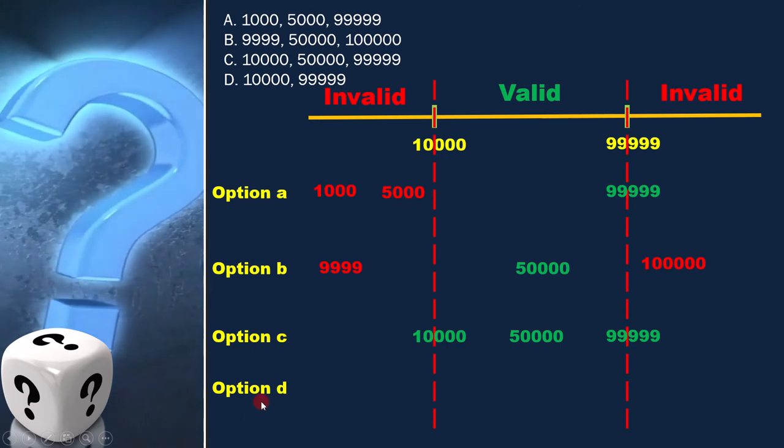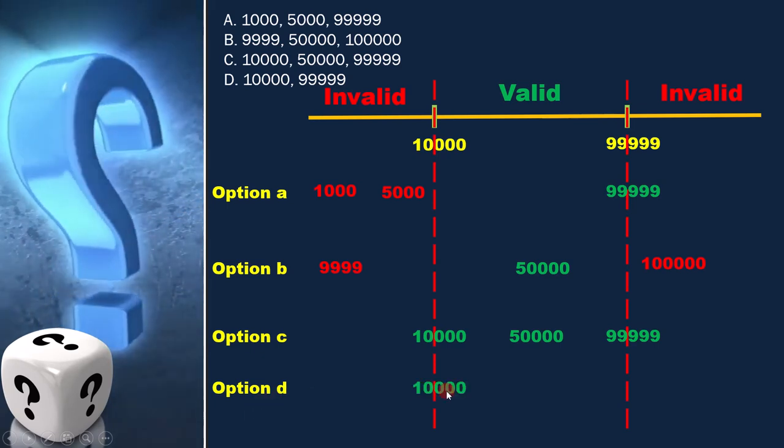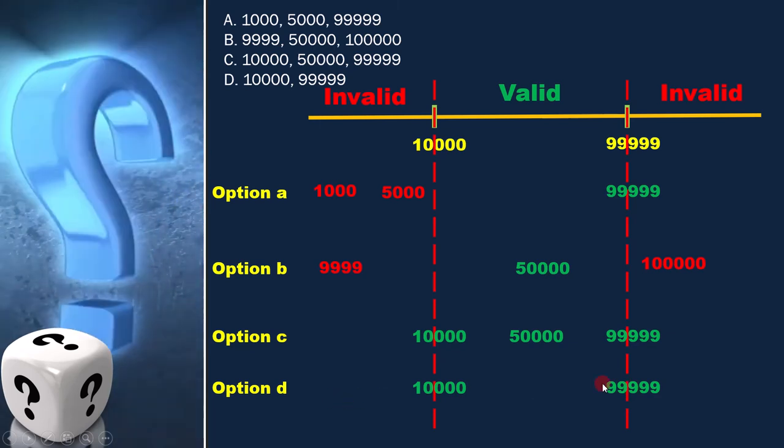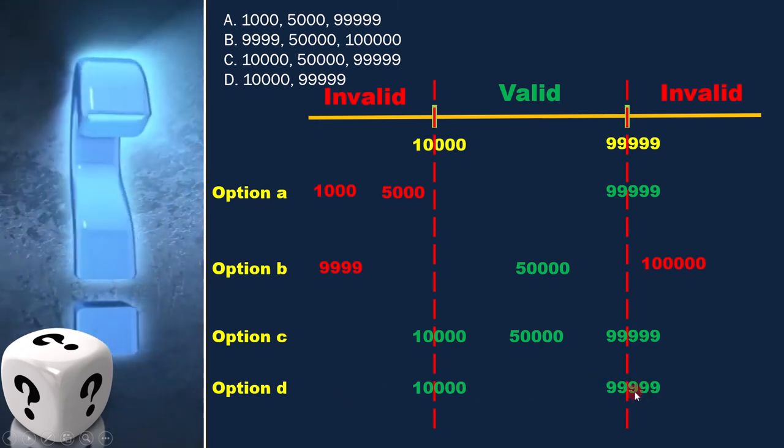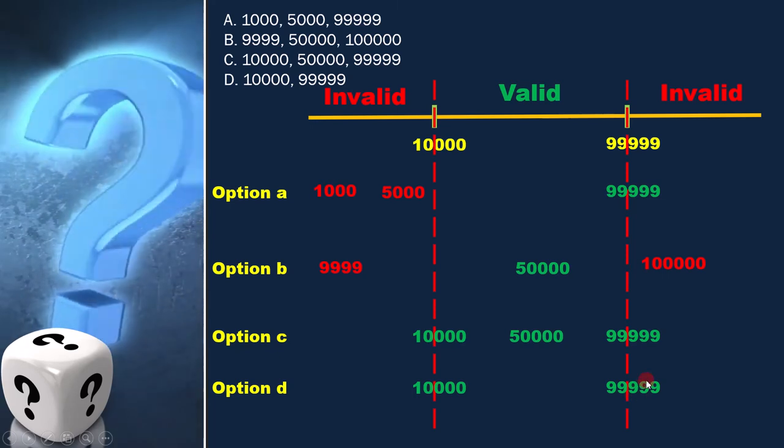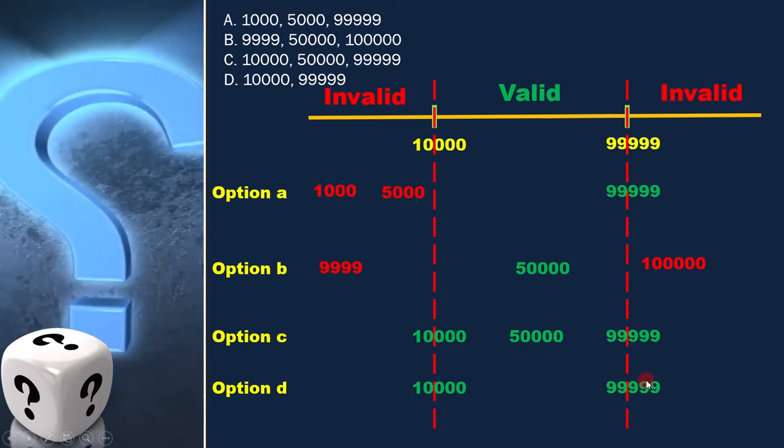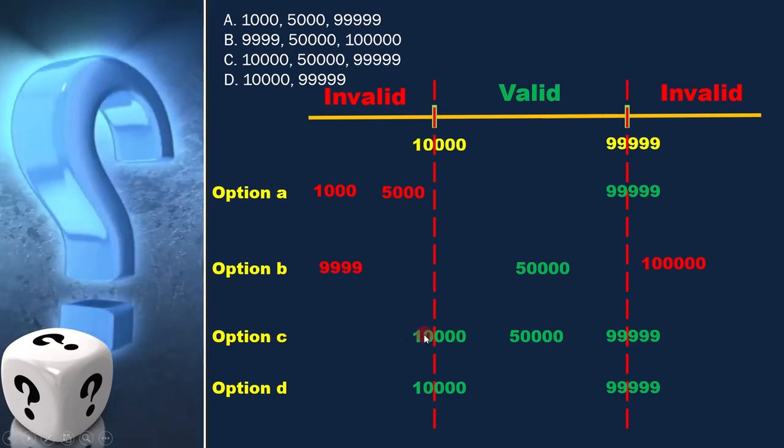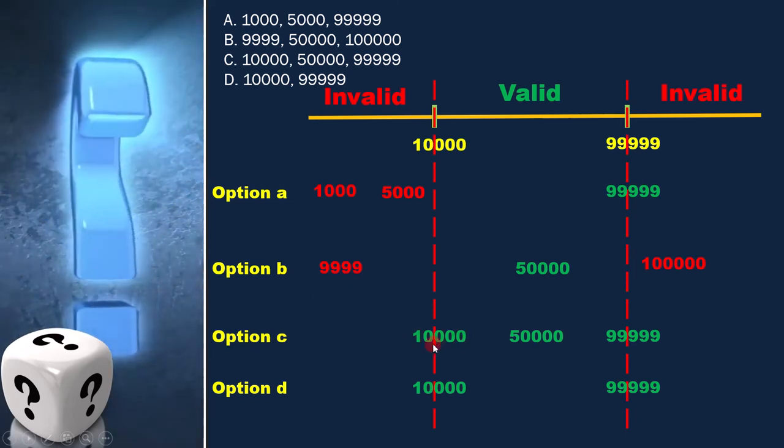Option D is 10,000 and 99,999. Here also both the values are valid. Since in the question they asked for both valid equivalence classes and valid boundaries, option C is more suitable answer compared to option D.